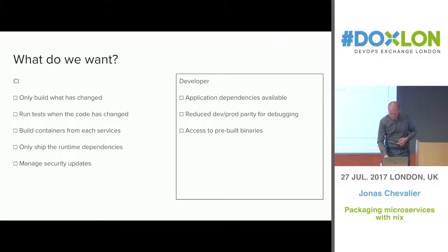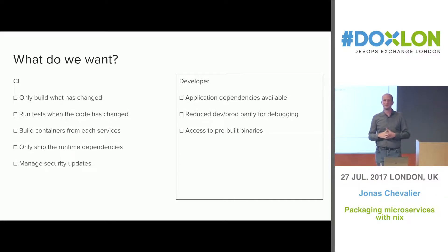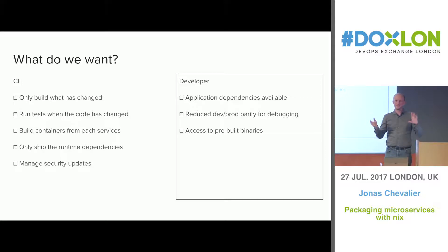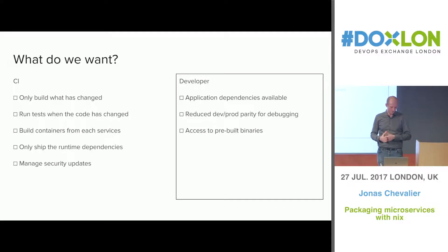Some of the properties that you want from the build system: you want to only build the things that have changed. For example, if you have two services like front-end and back-end, when you push new code you want to avoid building new images for both. You want to just run the tests when they change.